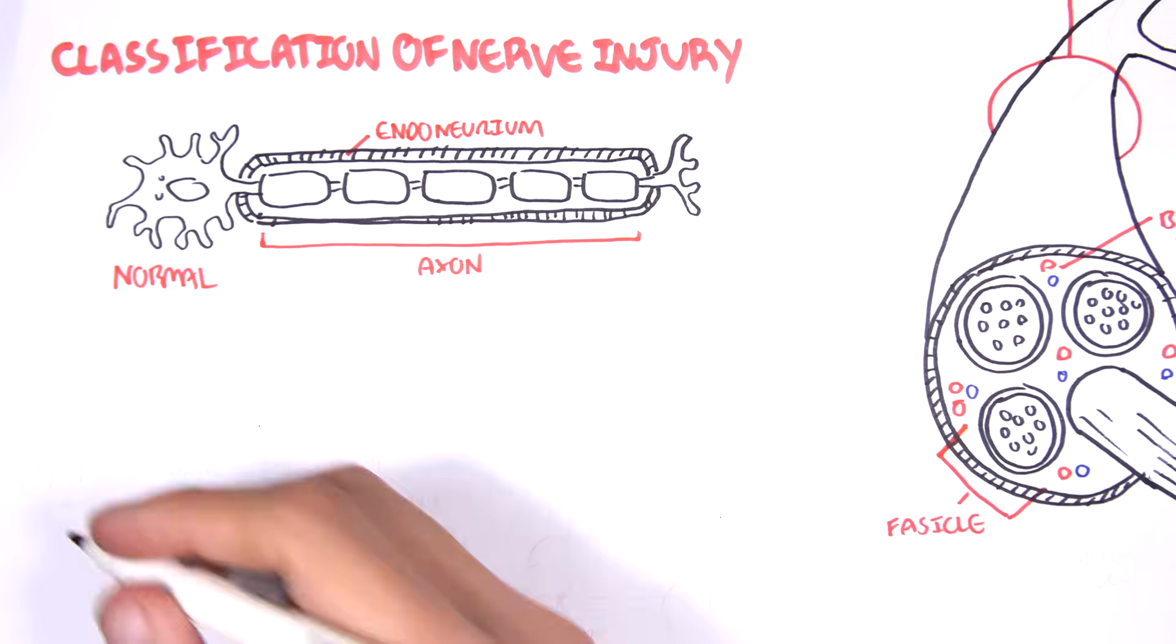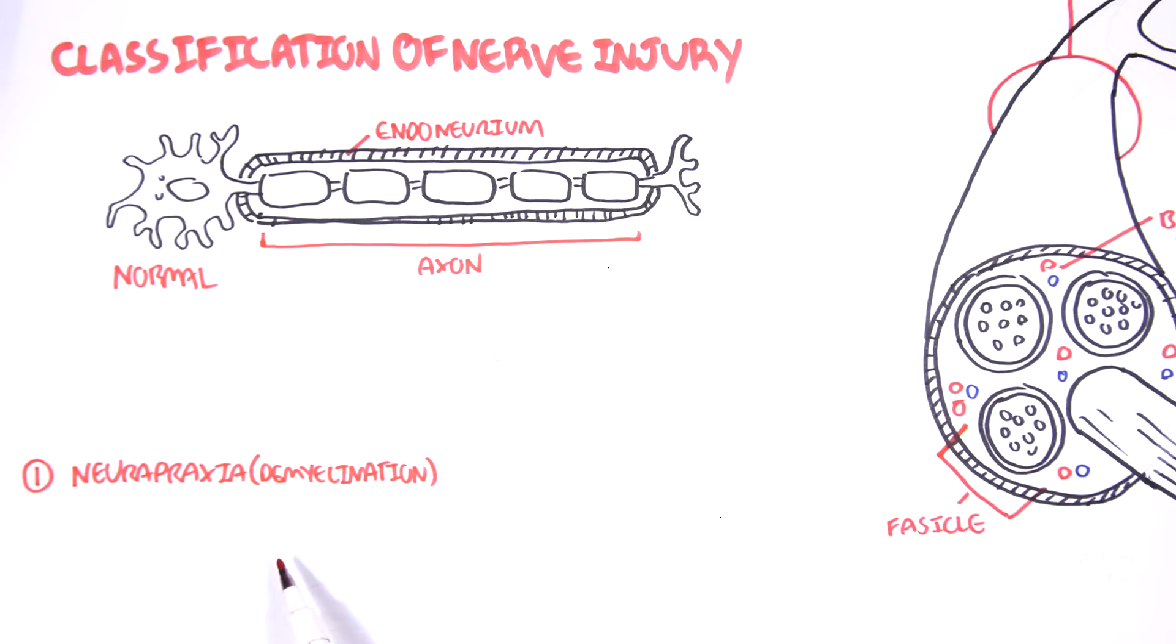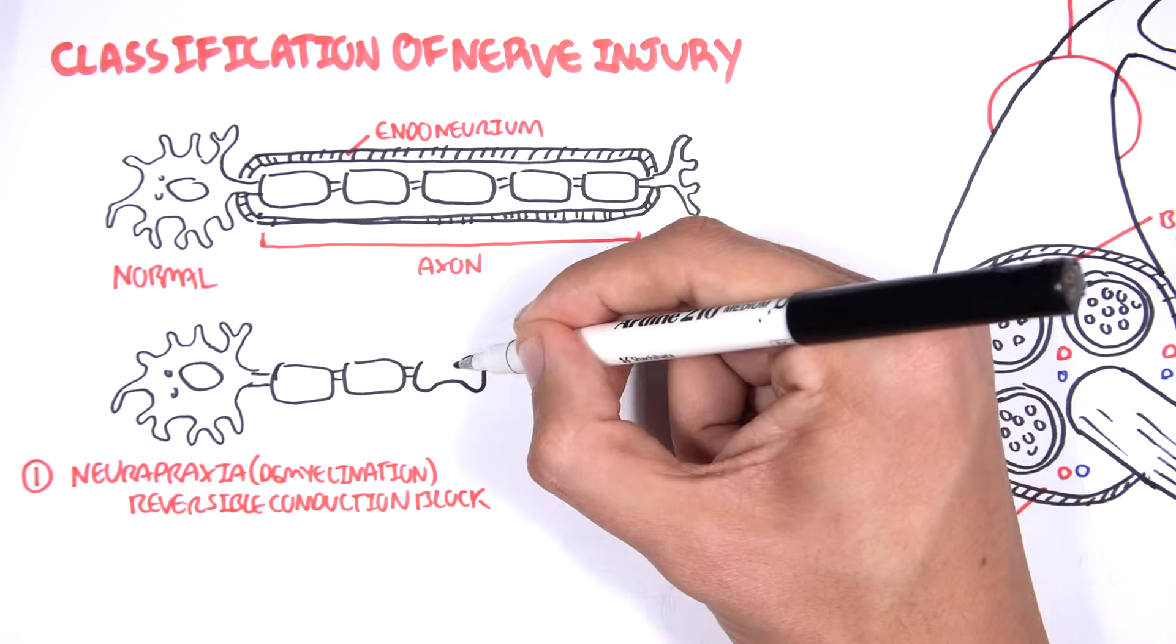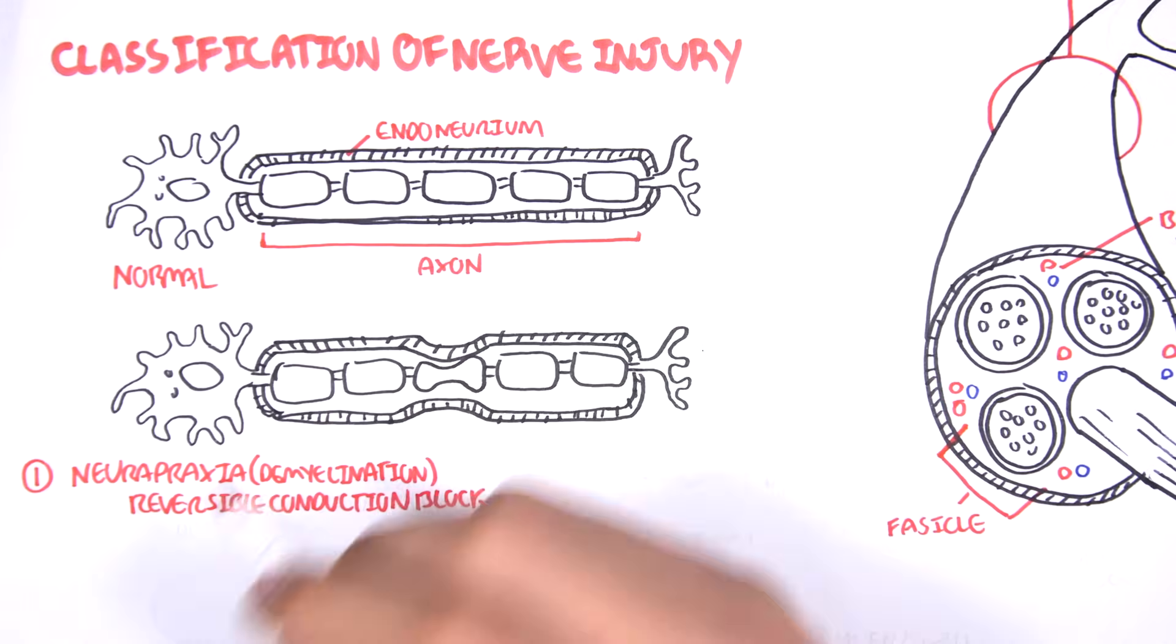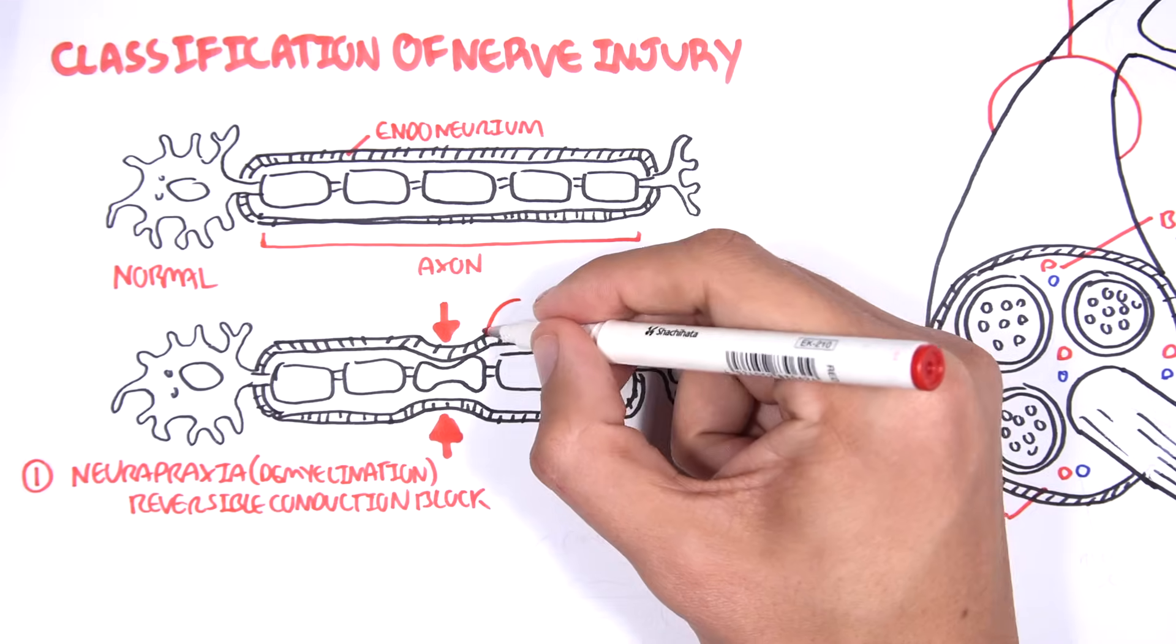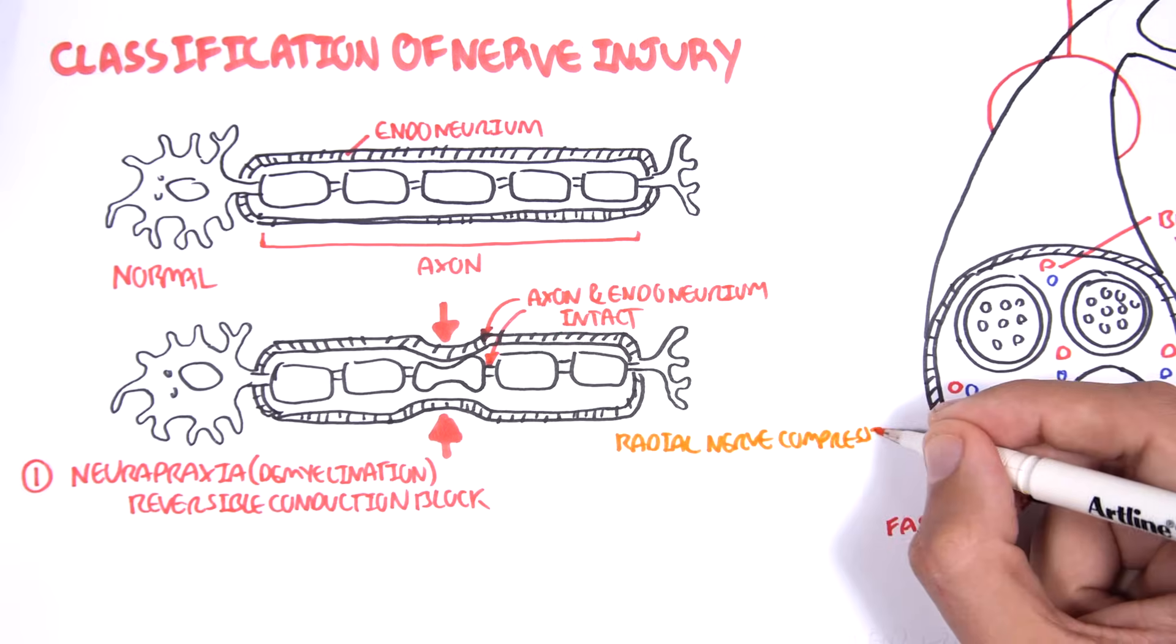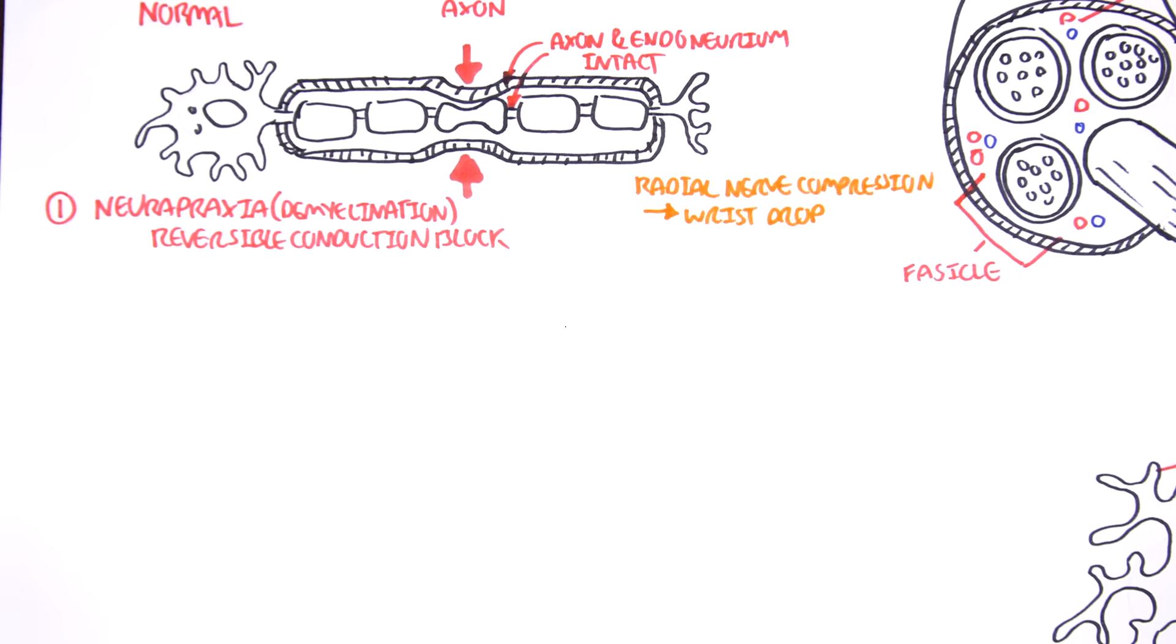Now, the first type of nerve injury, or the least severe, is called neuropraxia, where it is essentially demyelination. And this is essentially a reversible conduction block. So, if I were to draw the neuron here, and the endoneurium surrounding it, neuropraxia is essentially when you have compression here. And so, the axon and endoneurium is still intact. However, the myelin sheath is sort of compressed. And an example of this is when we have radial nerve compression, a wrist drop. So, if you wake up maybe in the middle of the night, and you've compressed your nerve, you have this sort of sensation.